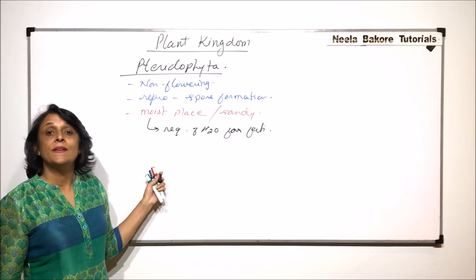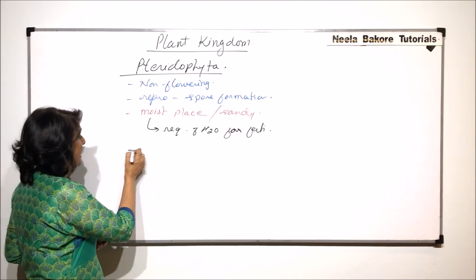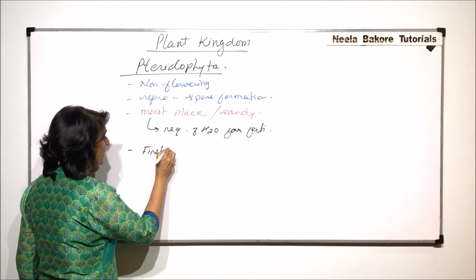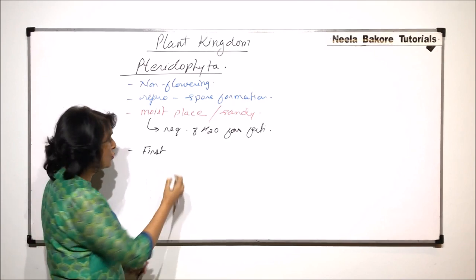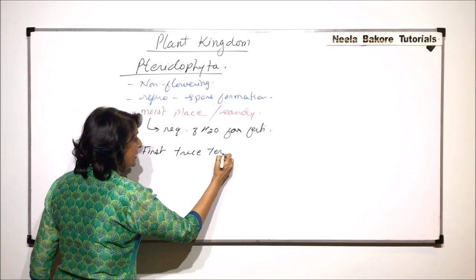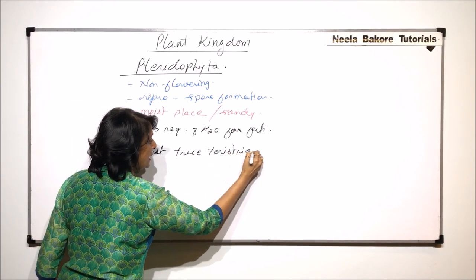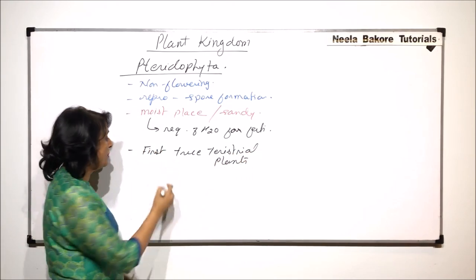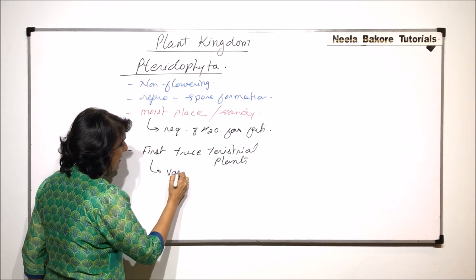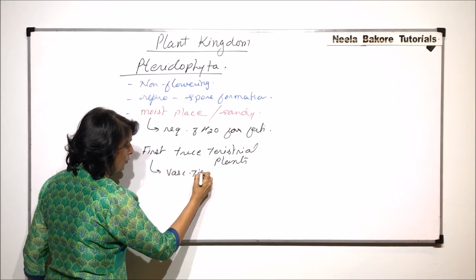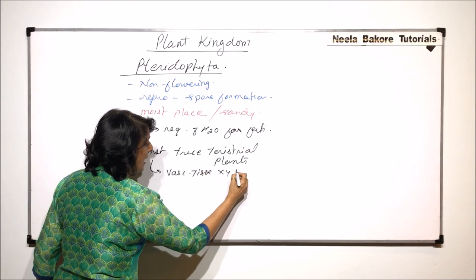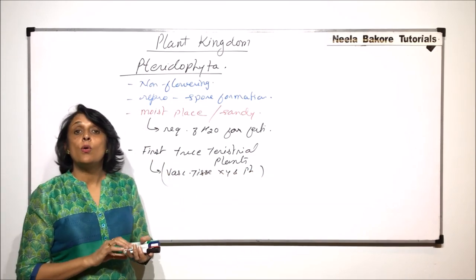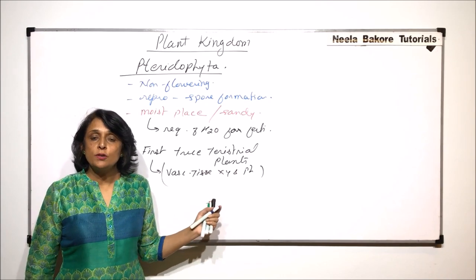They are the first terrestrial plants, or we can say the first true terrestrial plants. The reason why they are successful as terrestrial plants is they have vascular tissue, that is xylem and phloem. Now if you remember, bryophytes were called the amphibians of plant kingdom.